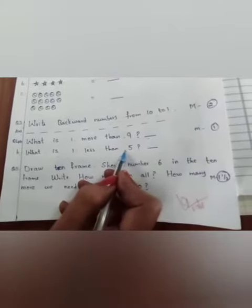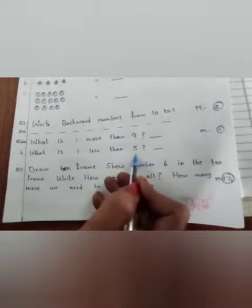Question number 4. What is 1 more than 9? This one also I explained in the YouTube. You have to write here. What will come? Which number will come here? Part B. What is 1 less than 5? Yes, children. We have to write less than 5.